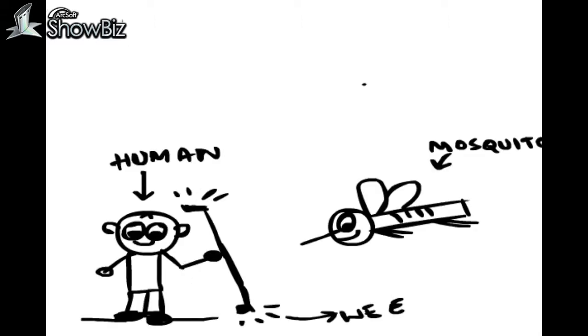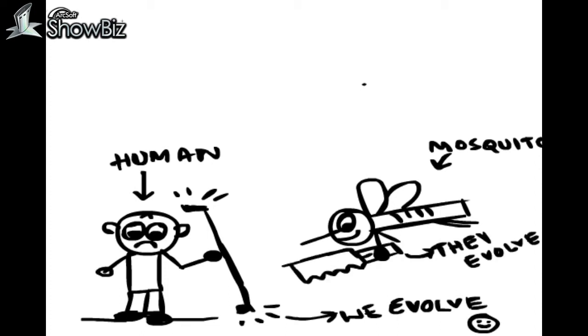Say humans evolved to get immune from mosquitoes. Mosquitoes also evolve. Mosquitoes breed much faster than humans, so they can adapt faster.